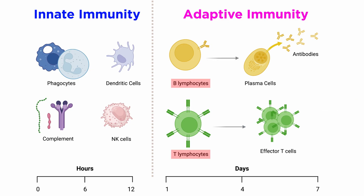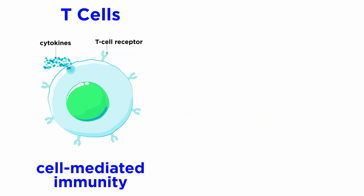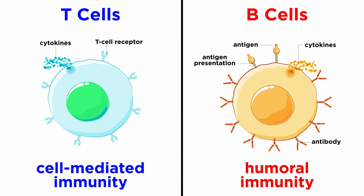T and B lymphocytes are considered to be the two pillars of adaptive immunity. T lymphocytes, or T cells, play an essential role in cell-mediated immunity, whereas B lymphocytes, or B cells, are key players in the humoral arm of adaptive immunity. Even though they have distinct functions, they do interact with each other and with other immune cells to mount the most efficient adaptive immune response for pathogen elimination.